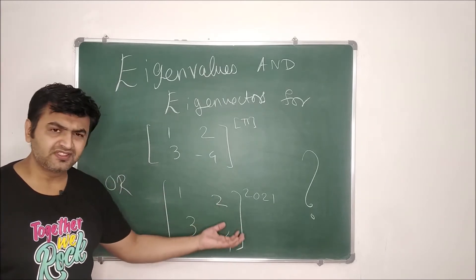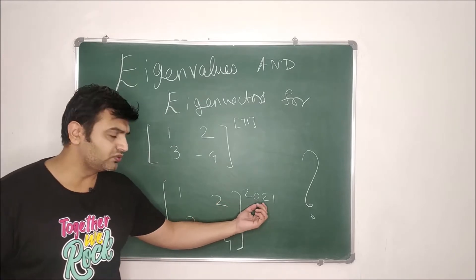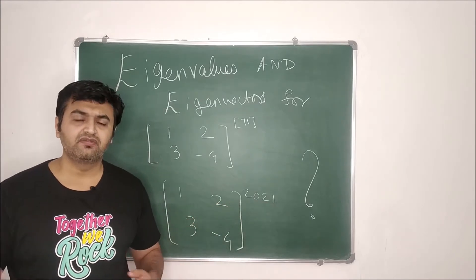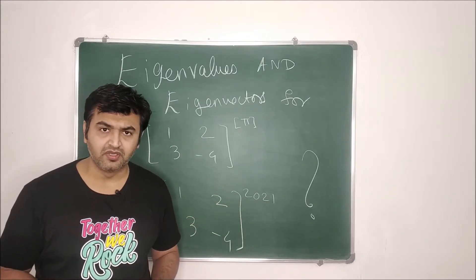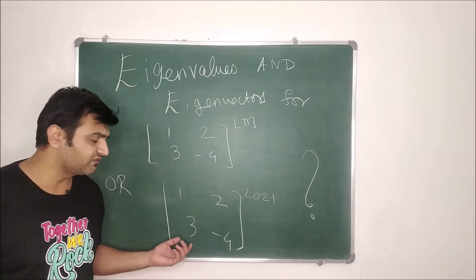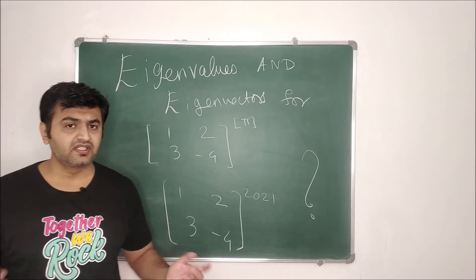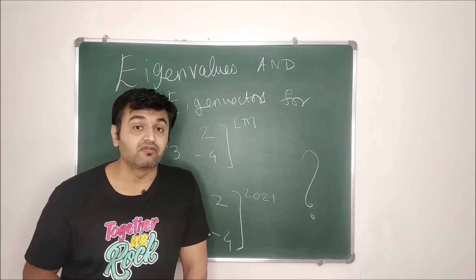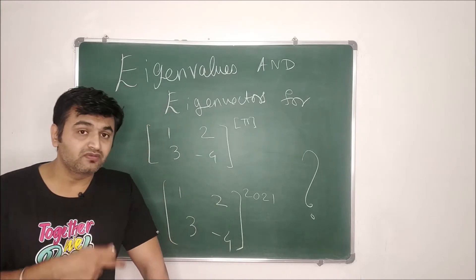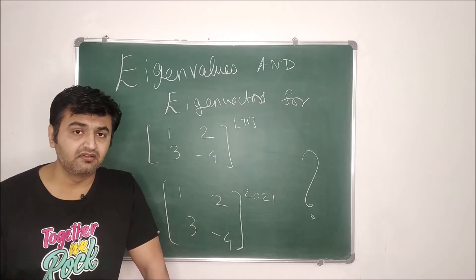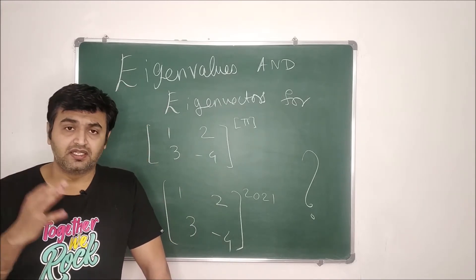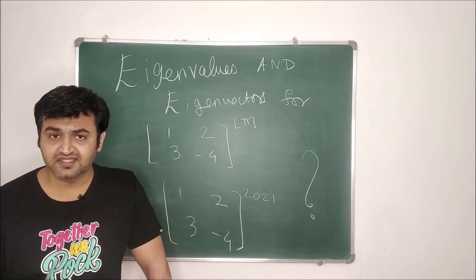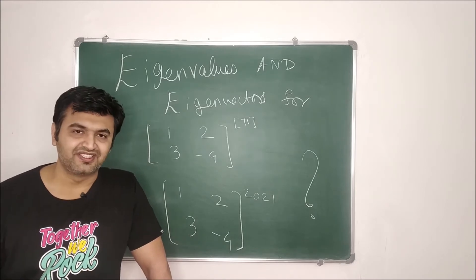Obviously it's not feasible to take a power like 2021 manually. Even if you go by software it will take a lot of time. So the question is: what is the trick to find the eigenvalues and eigenvectors for a power of a matrix? Let's look at the result and its proof that we are going to use.